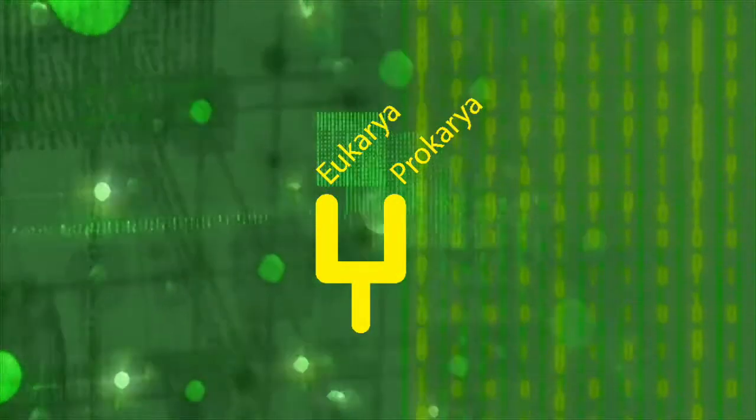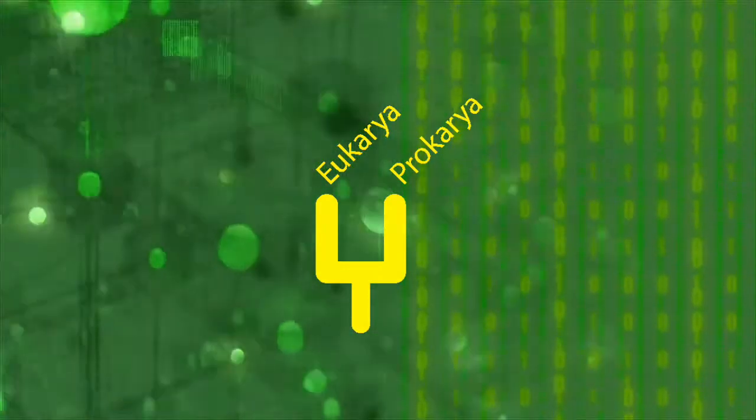In the alternative 2D tree, Eukarya and Prokarya are the only super-kingdoms.